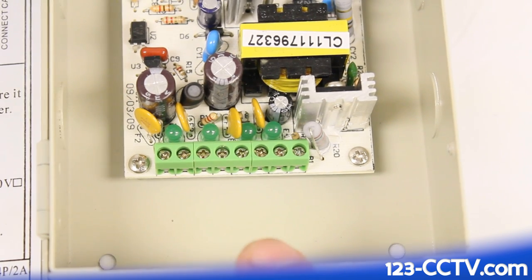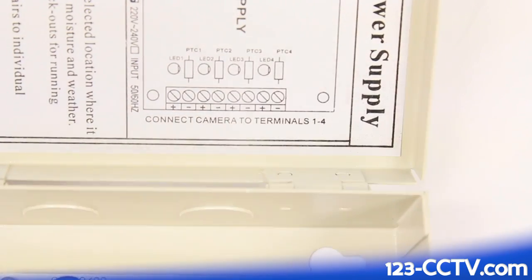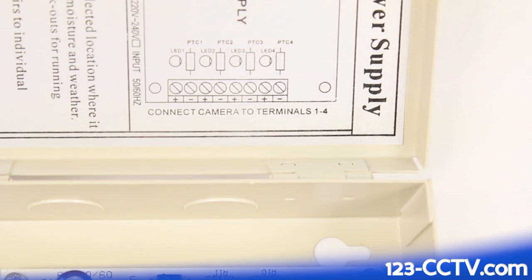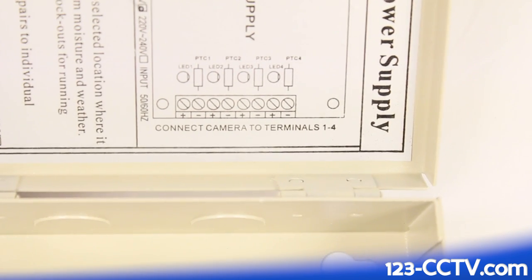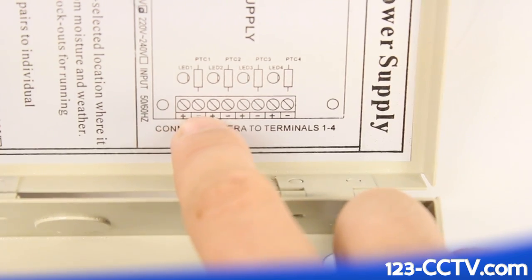This green bar is not labeled with positive or negative, but if we turn the box, we can see there's a diagram explaining which one is positive and which one is negative. According to the diagram, the first one on the left will be positive, and the second one will be negative.